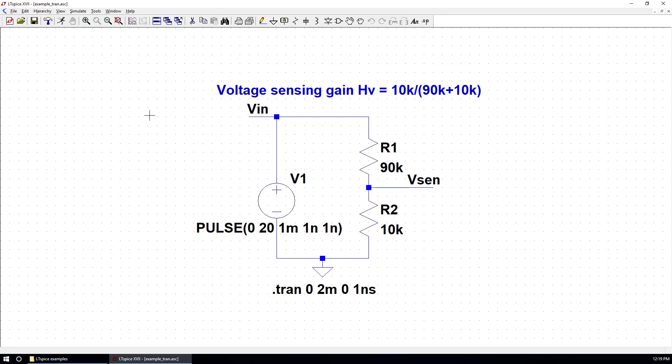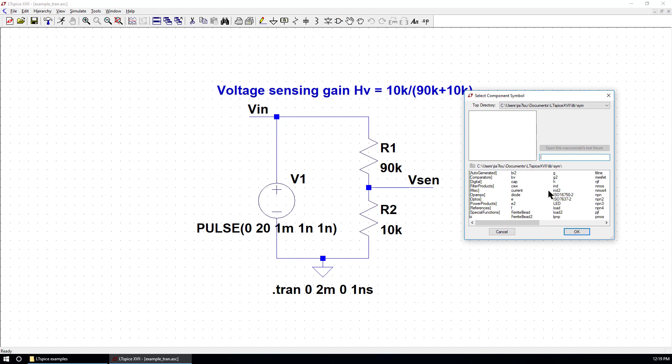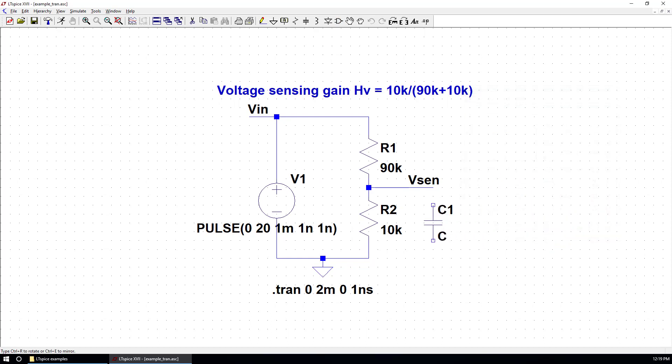I just opened the schematic for the previous case. We have a voltage divider. Now, we want to add another component capacitor. You go to component, click, cap, OK. So this is a capacitor.